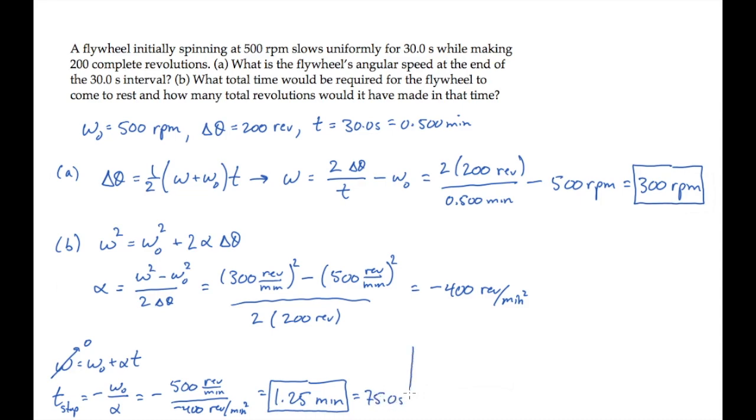We're also asked to find how many revolutions the flywheel would have gone through in that time. We can find that again using this kinematic equation, with the final angular velocity omega being zero, substituting the initial and the time required to stop to find that it takes 312 revolutions for the flywheel to come to rest.